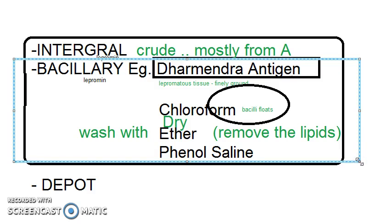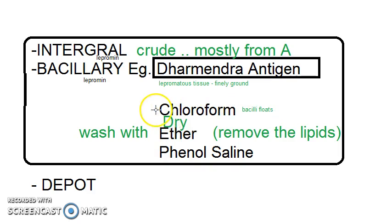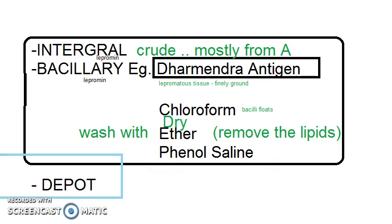Bacillary lepramine has more bacillary component; the example is Dharmedra antigen. The lepromatous tissue is finely ground, chloroform is added so that the bacilli float, the bacilli are collected and dried, washed with ether to remove lipids, and then prepared and injected in phenol saline. There is also a depot antigen preparation where oily media is used.